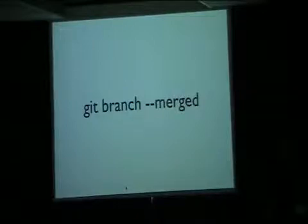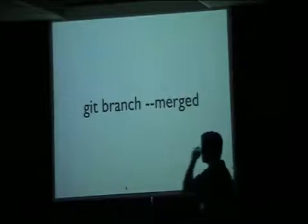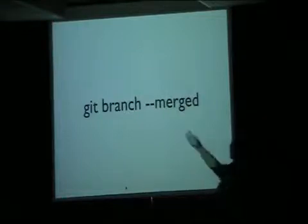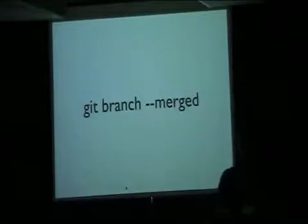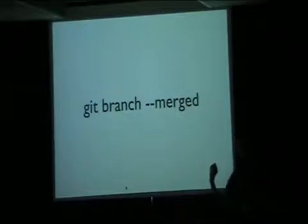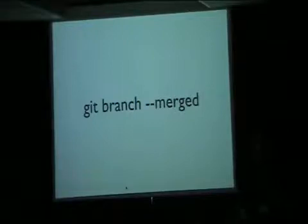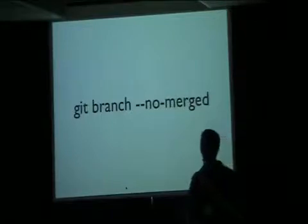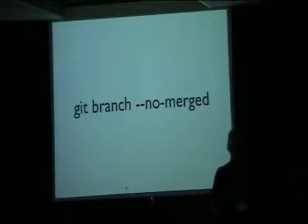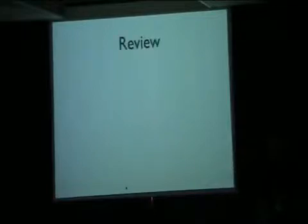Finally, merge branches. If you run git branch --merge, that will show you a list of your local branches — or with -a or -r it will show remote ones as well — that are already merged into your current head. These are deletion candidates because you've already merged them in. This is a good way to find branches on the server that you no longer need. git branch --no-merge gives you the opposite: branches you probably don't want to delete because they have unique work on them. You can go through each one and say git log that-branch not HEAD to see what's unique to it.